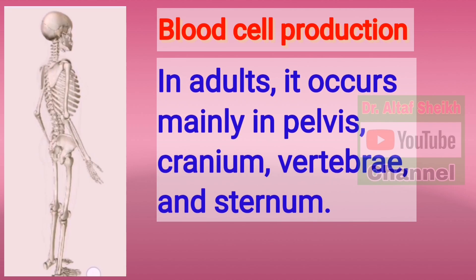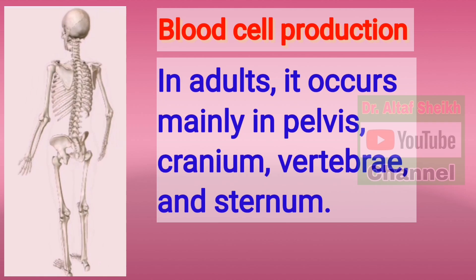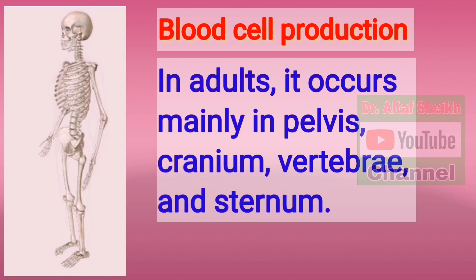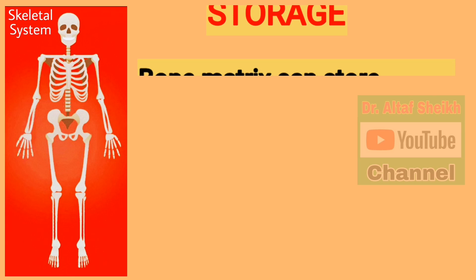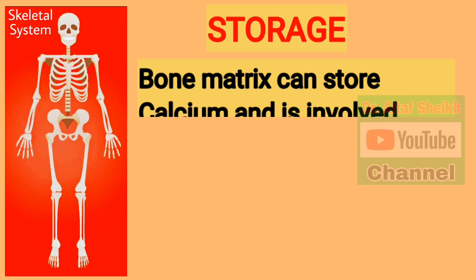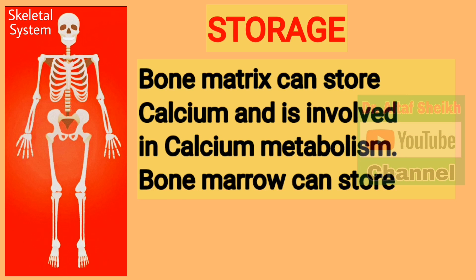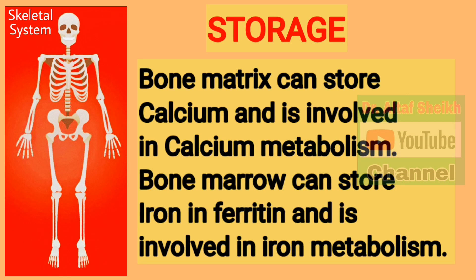In adults, it occurs mainly in the pelvis, cranium, vertebrae and sternum. Bone matrix can store calcium and is involved in calcium metabolism. Bone marrow can store iron in ferritin and is involved in iron metabolism.